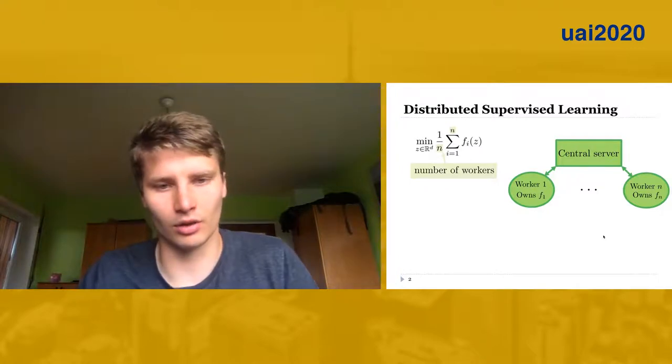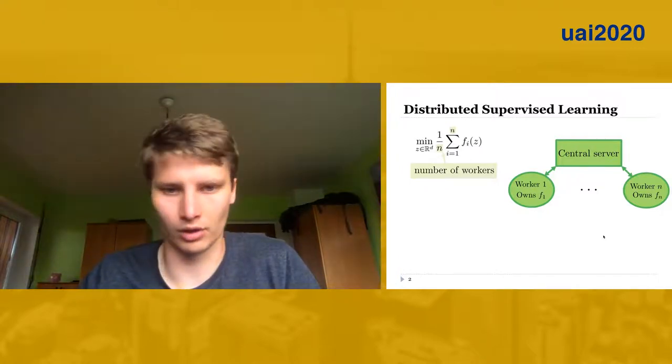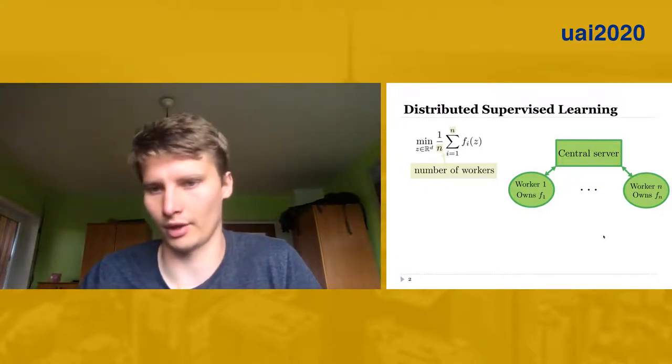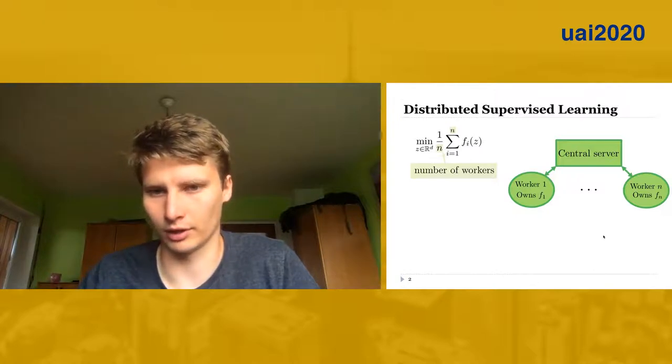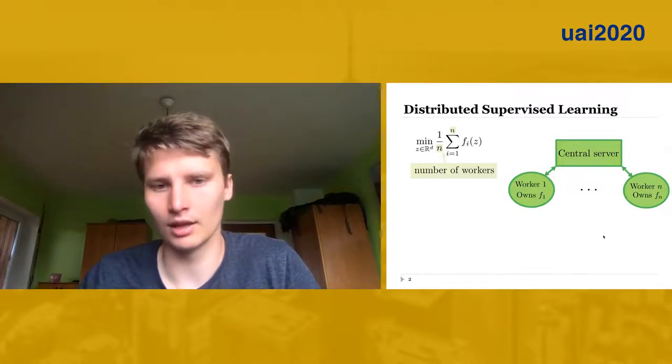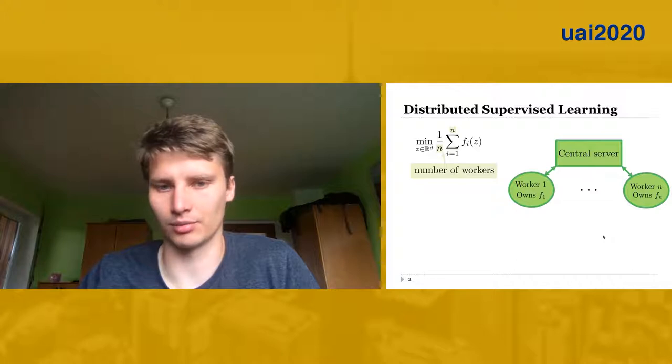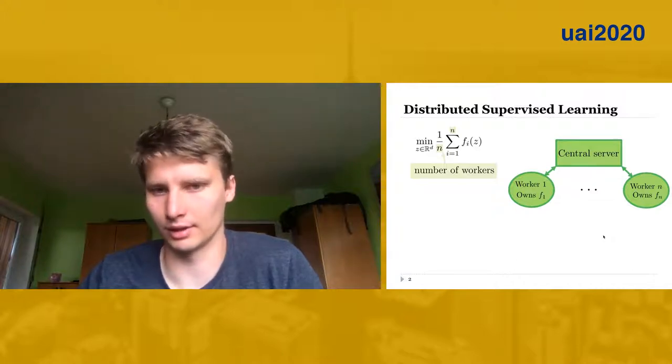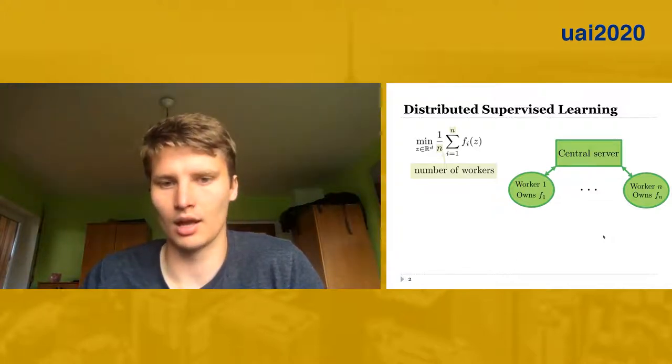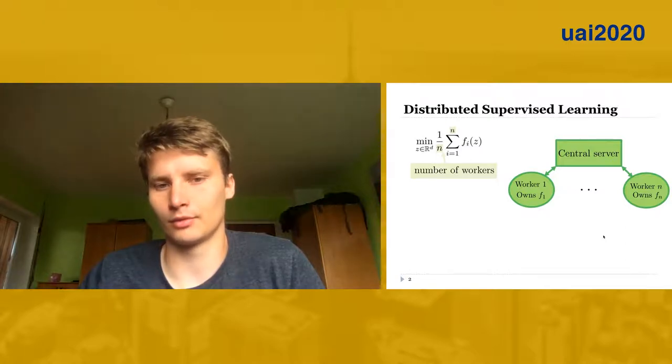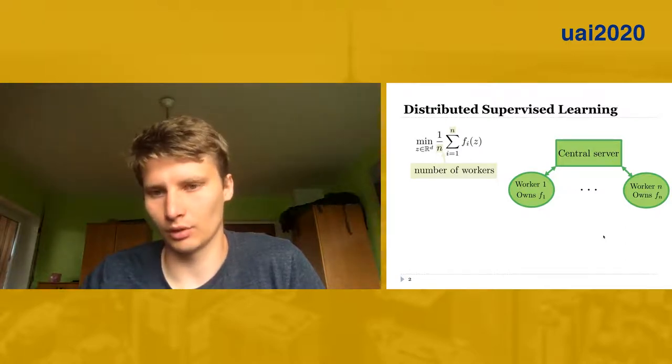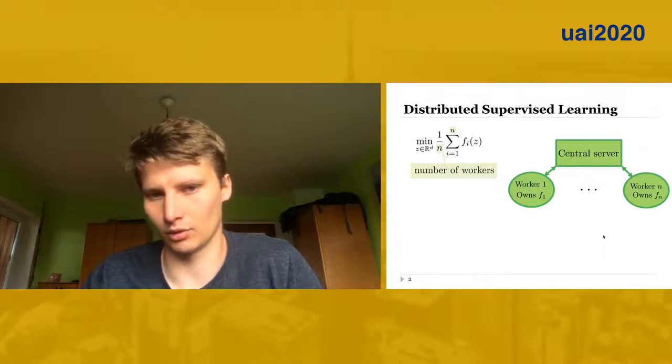The first worker owns function f1, the second worker owns function f2, and so on up to the nth worker. Those workers can be seen as, for example, some machine or computer in a data center. Those workers are not allowed to communicate among themselves, but rather they communicate to some central authority or central server.